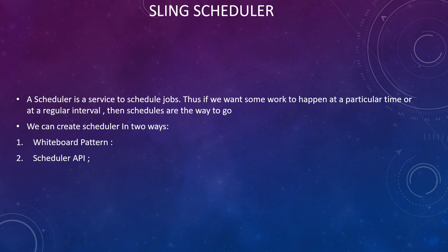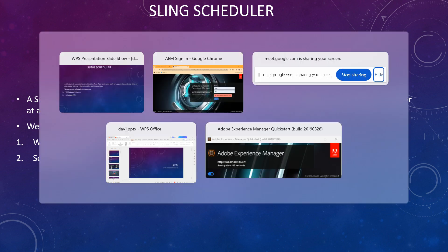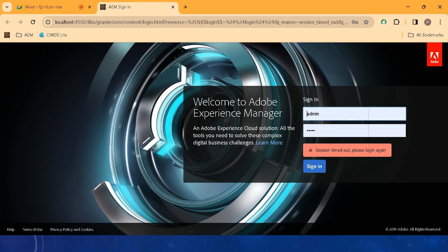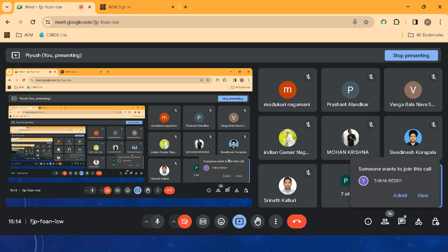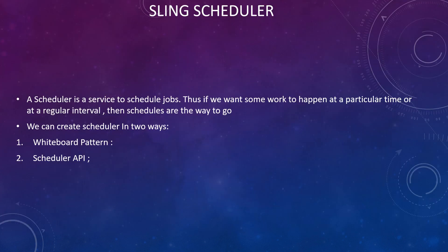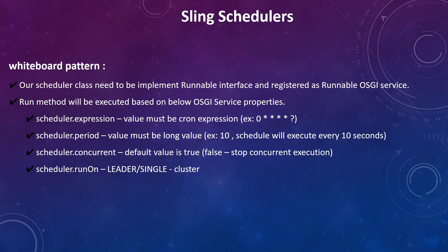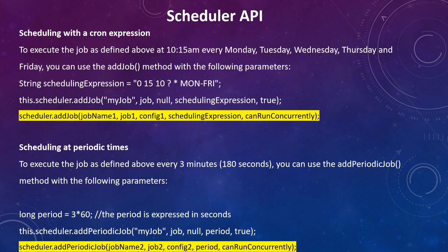Using the Scheduler API, if you want to schedule something you use the schedule method; if you want to unschedule it you use the unschedule method; and if you want to set the name of the scheduler you use the name method. They have provided this Scheduler API and you can use it.